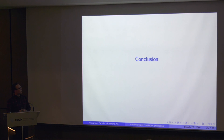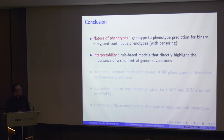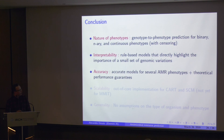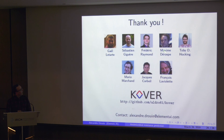To conclude: we are able to do genotype-to-phenotype prediction for binary, N-ary, and continuous phenotypes with possible censoring. We obtain interpretable models explicitly highlighting the importance of specific K-mers and genome regions for phenotypic predictions. We have accurate models for many antibiotic-resistance phenotypes, performance guarantees based on sample compression theory, and scalable out-of-core algorithms. We make no assumption on the type of organism or phenotype — the same algorithms could be reused for other phenotypes and organisms. Thank you, and thanks to all co-authors including Sébastien.